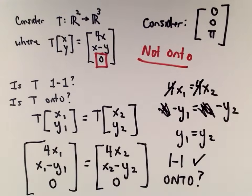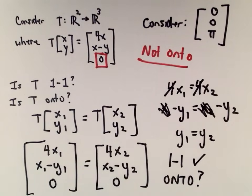That's my overview of one-to-one and onto functions. You can also talk about the kernel and use other techniques to analyze these properties. I hope this helps — feel free to post any comments and questions, and hopefully either I or someone else out there can steer you in the right direction.